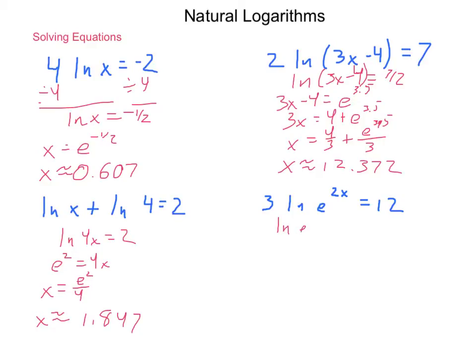So, we have the natural log of E to the 2X equals 12. Oh, sorry. Get rid of that. Equals 4. Divided by 3.